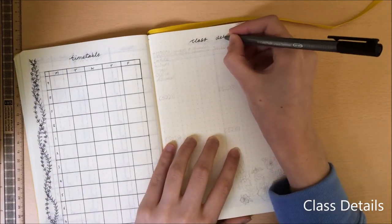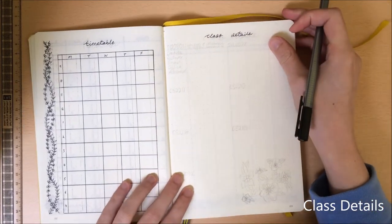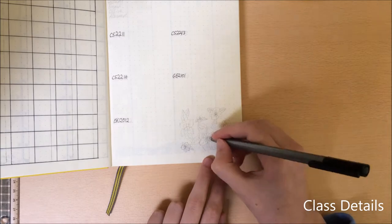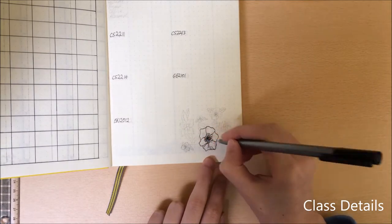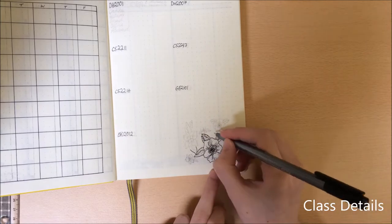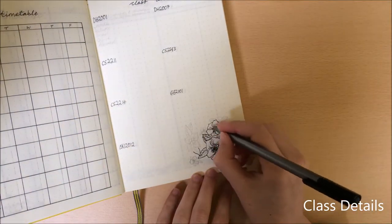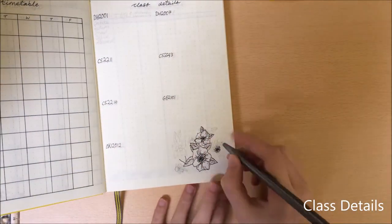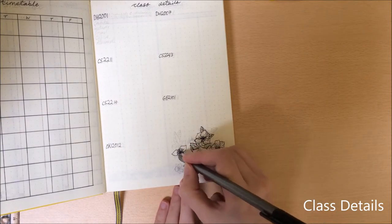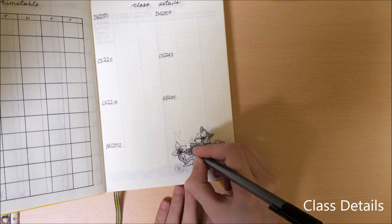Next is a short section for class details. I've included the basic details needed for each of my classes. That way I can look at the timetable to see what class I have and then right next to it will be the professor, their office hours, email, etc. And it's very handy to just have this very close together instead of having to keep flipping through the bullet journal trying to find where that one professor's email is.